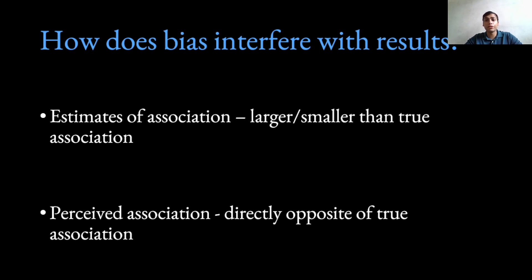Now how does bias interfere with results? When bias is introduced in a test or a research, the estimates of association can be larger or smaller than the true association, so there will be deviation in our estimation. In some situations, the estimated association can be directly the opposite of the true association.